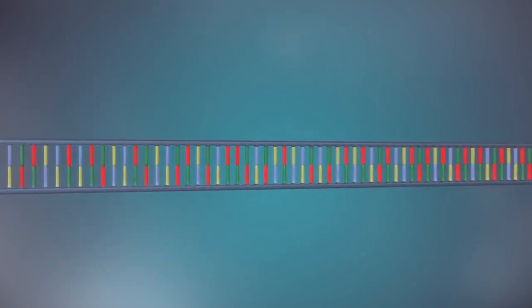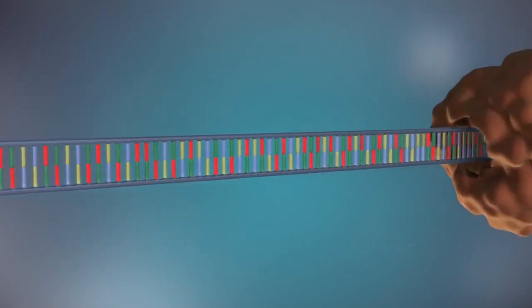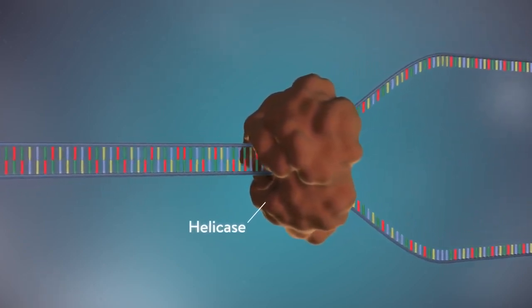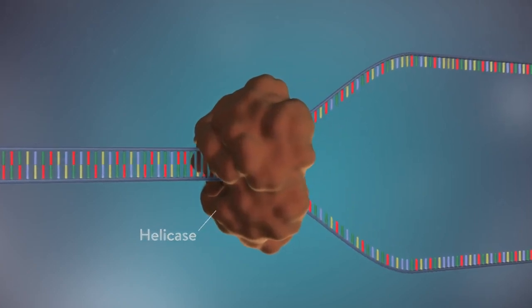The first step in DNA replication is to separate the two strands. This unzipping is done by an enzyme called helicase and results in the formation of a replication fork.